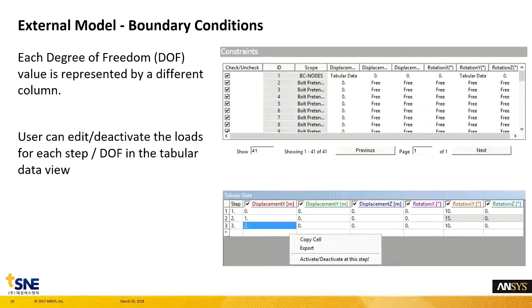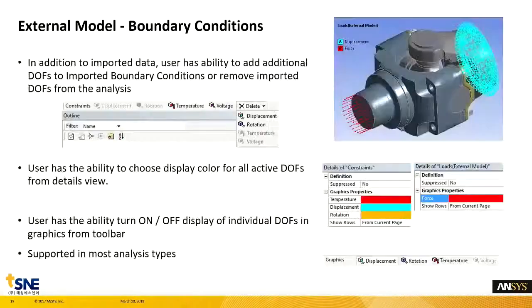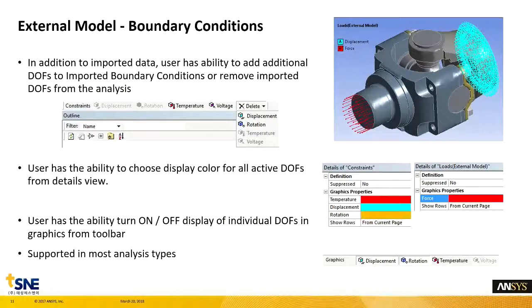Boundary 노드 정보를 확인하거나, 불러온 Bolt Pretension 정보도 확인하실 수 있게 되어 있습니다. 사용자는 Tabular 데이터를 사용해서 각 스텝별 자유도에 대한 하중을 수정하거나 비활성화하는 작업이 가능해졌습니다. 가져온 데이터 외에도 불러온 경계 조건에 자유도를 추가하거나 제거하는 기능이 가능해졌는데요. Delete를 사용해서 Displacement나 Rotation 등 경계 조건부에 대해서 삭제 또는 추가 작업을 해 주실 수 있게 되어 있습니다. 상세 설정 창에서 활성화된 자유도의 표시 색상을 선택하실 수 있습니다.